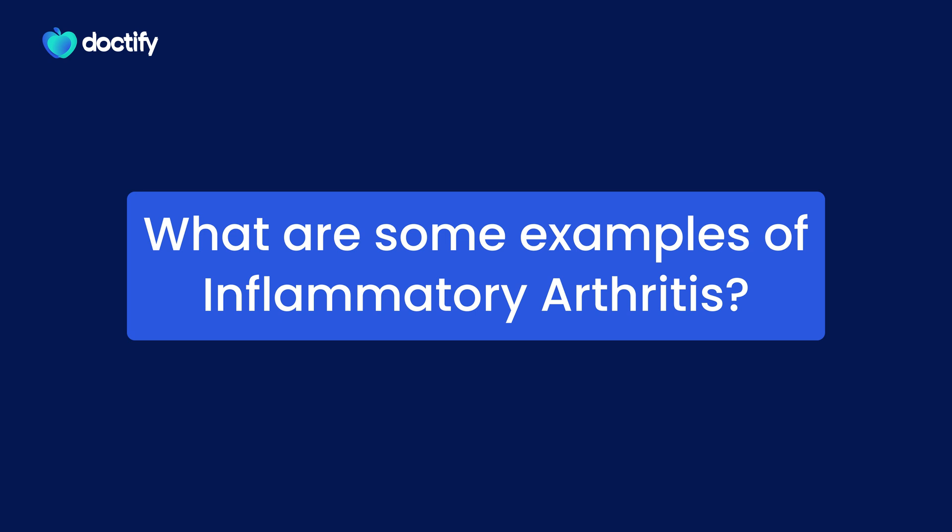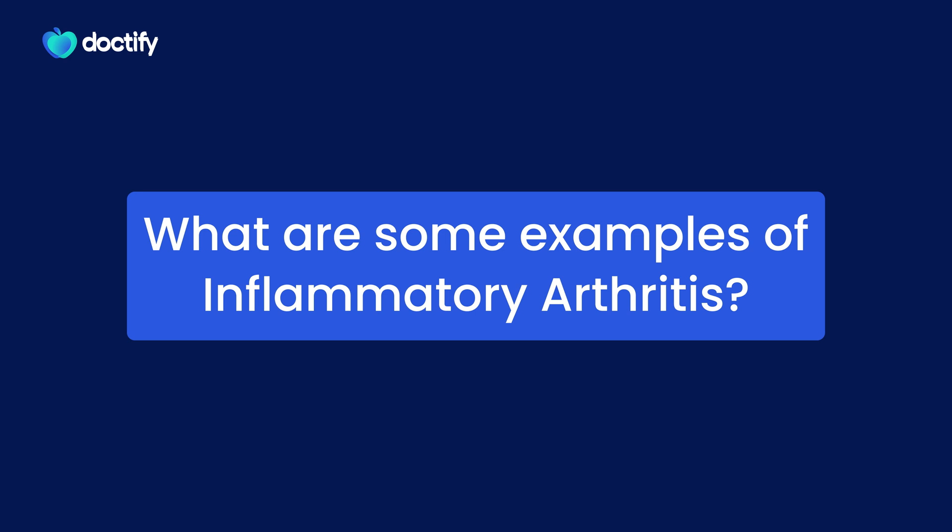So what are the examples of inflammatory arthritis? The three most important ones to think about are rheumatoid arthritis, which is by far the most common; psoriatic arthritis, which is inflammatory arthritis in patients who have psoriasis, the skin condition that causes scaly skin; and then there are the spondyloarthritis causes, where patients have inflammation in the back but also in the peripheral joints, in the hands and the knees, etc.